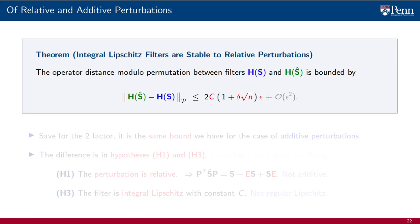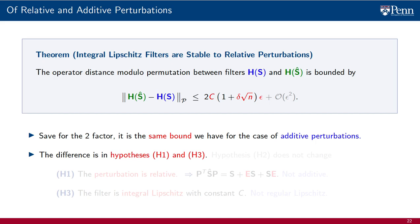The theorem is very similar to what we have seen for additive perturbations. In fact, save for the factor of two, which doesn't have any conceptual meaning, the theorem's thesis is the same bound we have for the case of additive perturbations. The difference is in hypotheses H1 and H3. In hypothesis H1, the perturbation is relative, not additive. This means the perturbed graph S-hat depends on the given graph S through the multiplicative symmetric error term ES plus SE, modulo permutation as usual.